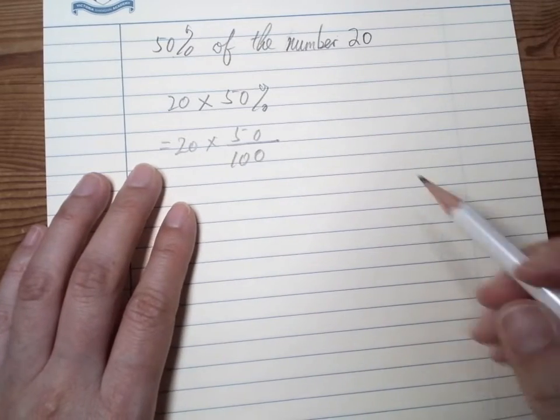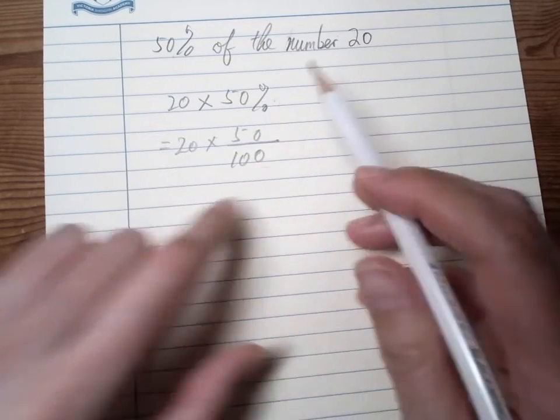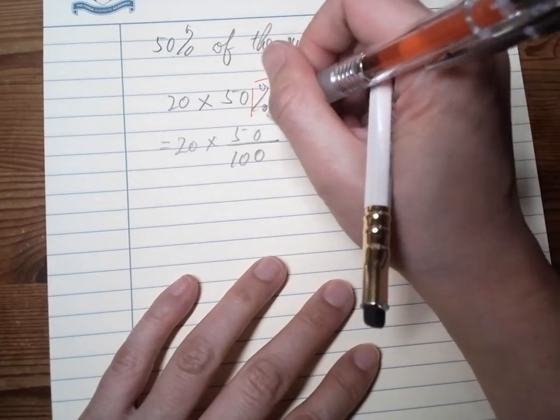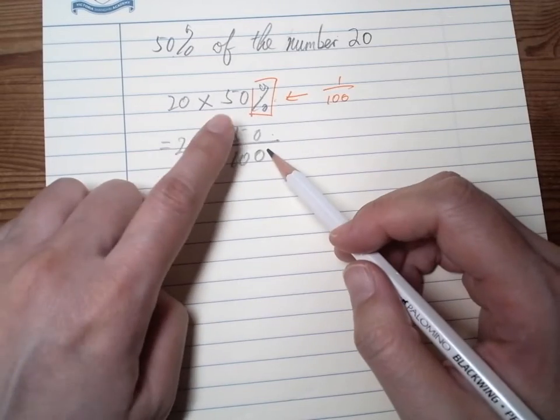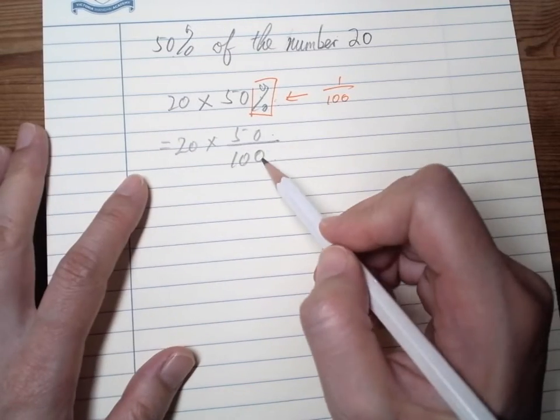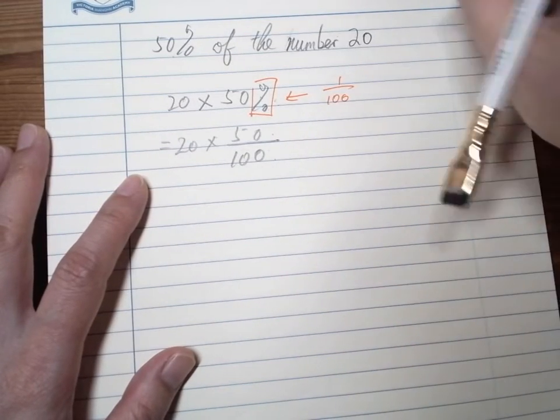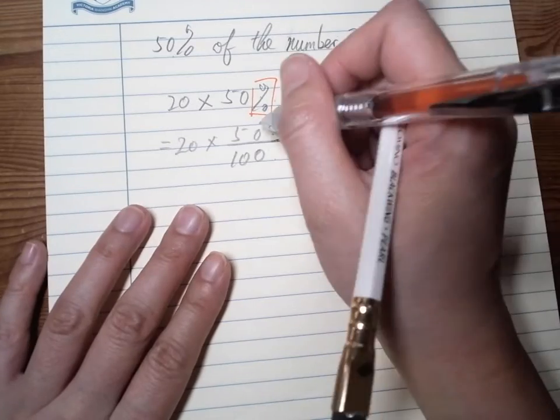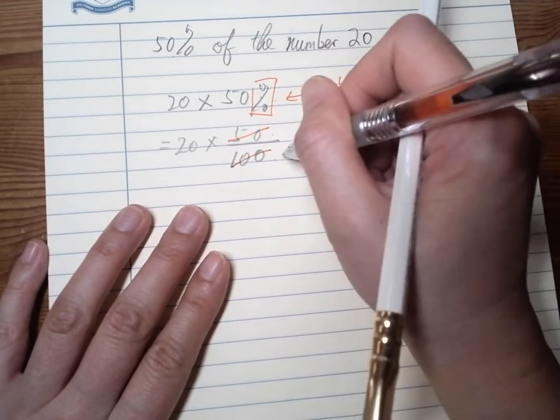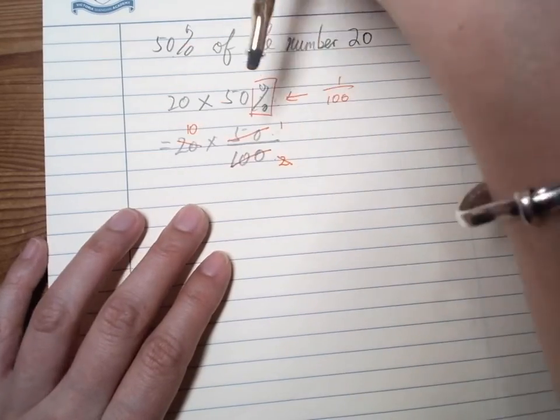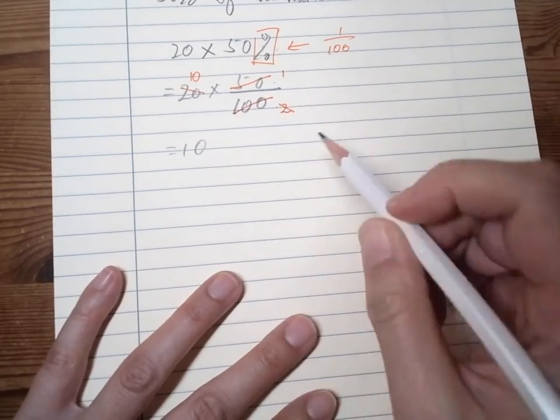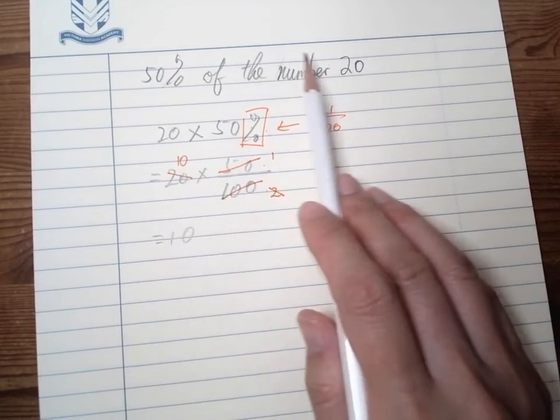The percentage symbol means 1 over 100, so I rewrite 50 percent to 50 over 100. And then just like our multiplying fraction, we can keep simplifying it. So 50 and 100 - that's 1 and 2. Now 2 and 20 can simplify, so we have 10. So we know that 50 percent of 20 is 10.